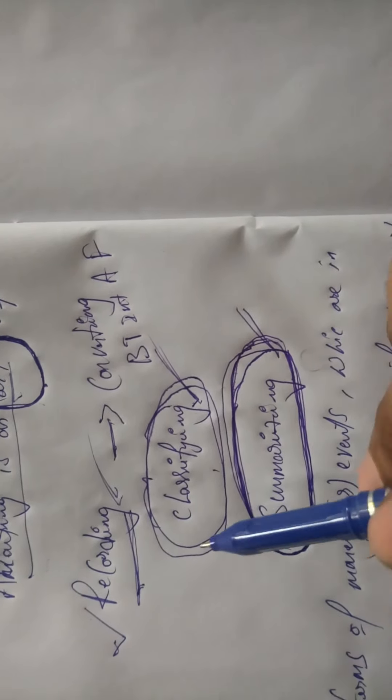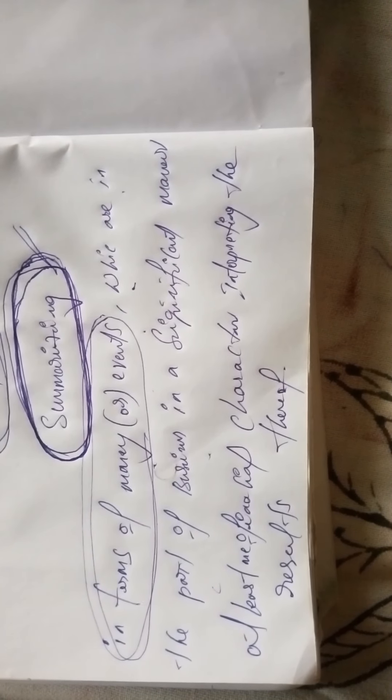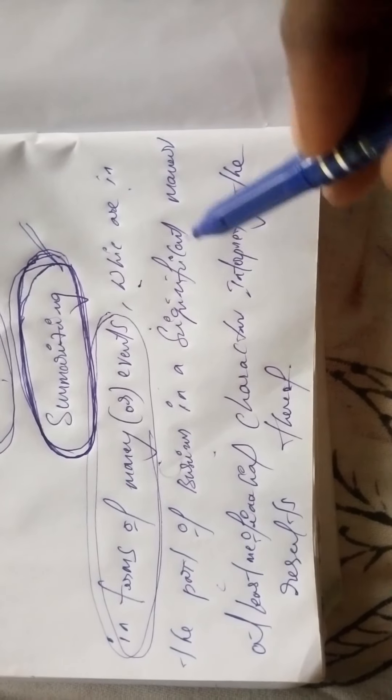The next line: in terms of money or events. In the preparation of accounts, we only consider money or money-related events. That is what is mentioned in this line. The money-related activities which are part of business — those money-related events are what we take into consideration to prepare the accounts.